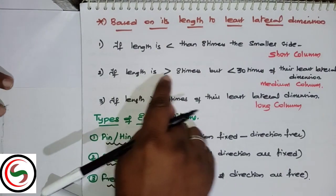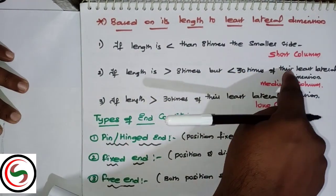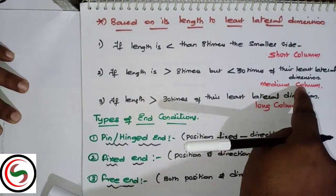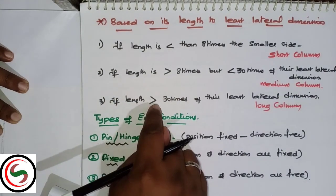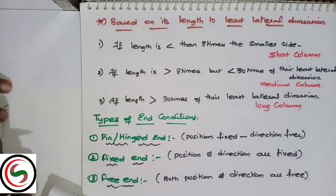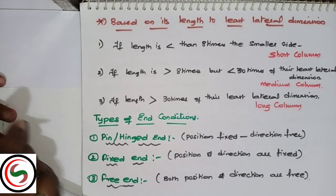If length is greater than 8 times but less than 30 times their least lateral dimension, we call it a medium column. If the length is greater than 30 times, it is called a long column.